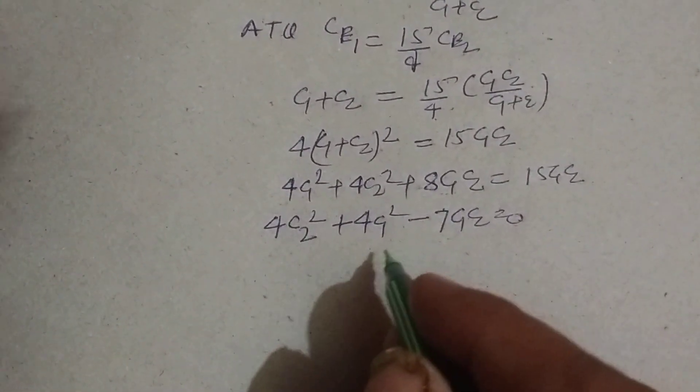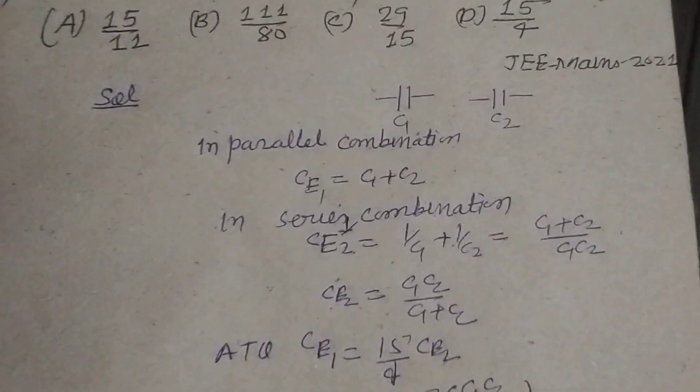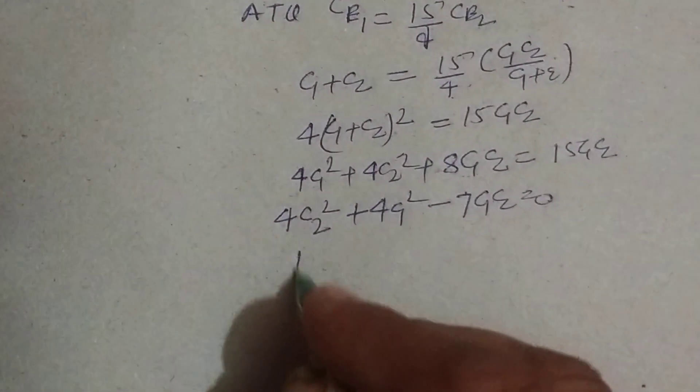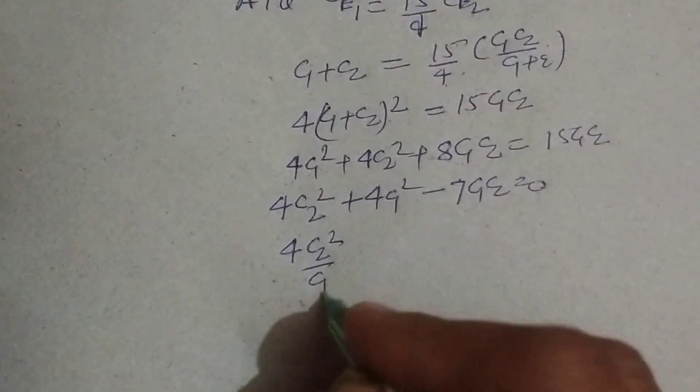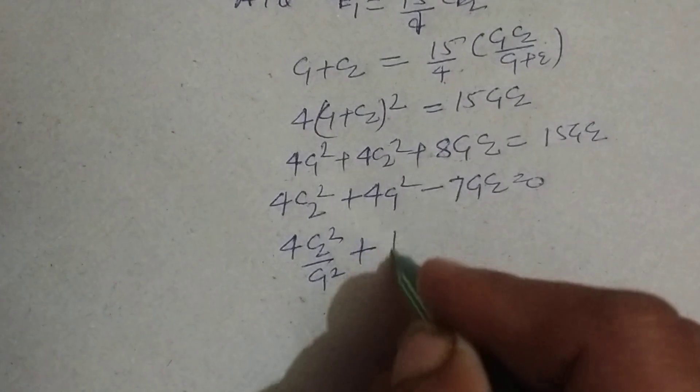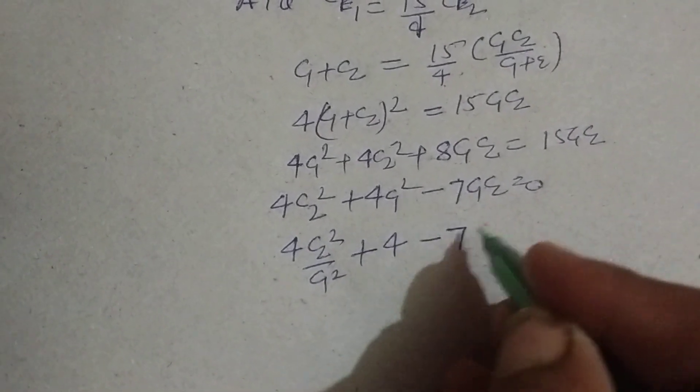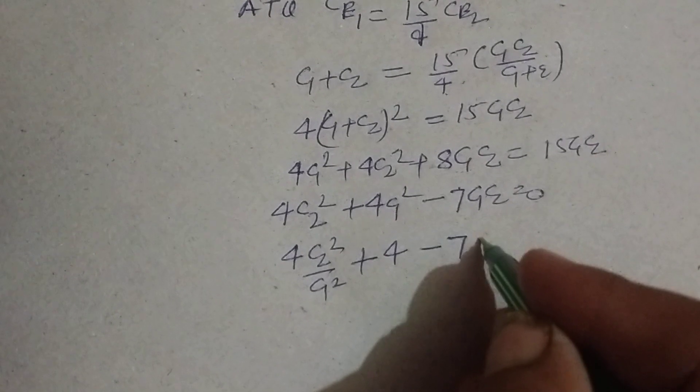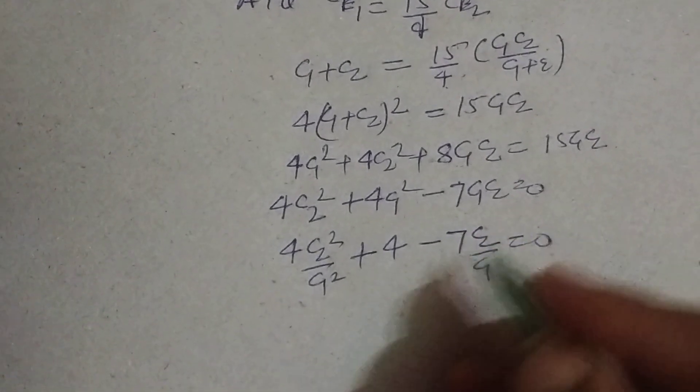Now, dividing, we want to find out C2 over C1, so dividing by C1 square, so 4 C2 square over C1 square plus 4 minus 7 C2 over C1 equal to 0.